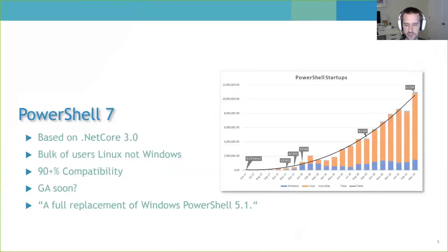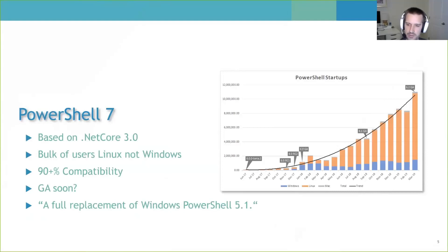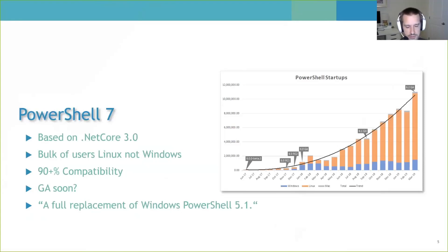PowerShell 7 is based on .NET Core 3. With PowerShell 6, there was a lot of adoption by Linux users but not so much for Windows users, because everything retooled for .NET Core didn't work with older .NET Framework-based modules, causing compatibility issues. PowerShell 7 was designed to bring more compatibility for Windows users—roughly 90% compatibility is expected. The chart shows it really took off with Linux users while Windows users hung back on PowerShell 5, including myself.